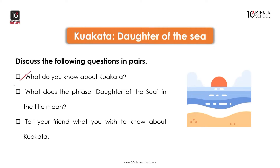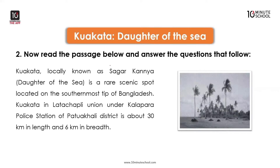What does the phrase 'daughter of the sea' in the title mean? Because of its natural beauty, Kuakata is called the daughter of the sea. Tell your friend what you wish to know about Kuakata. The daughter of the sea is a rare scenic spot located on the southernmost tip of Bangladesh.